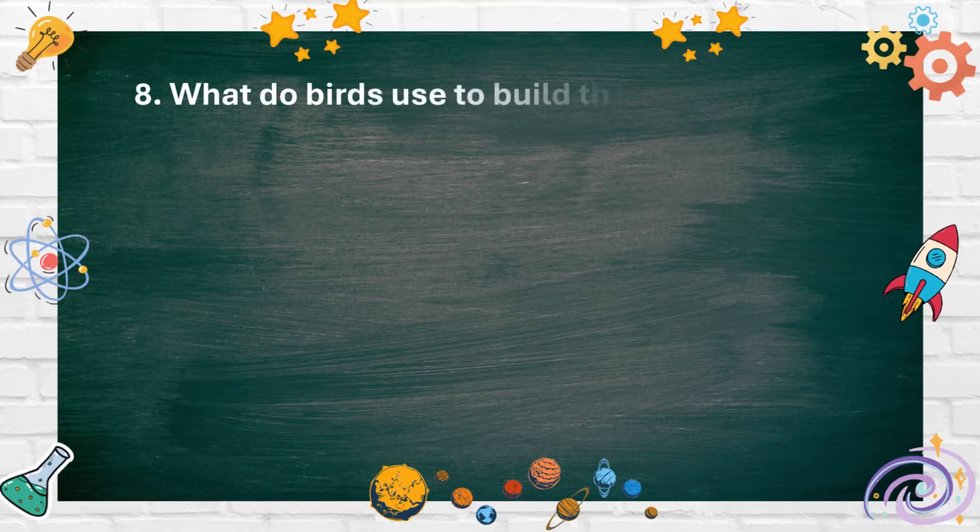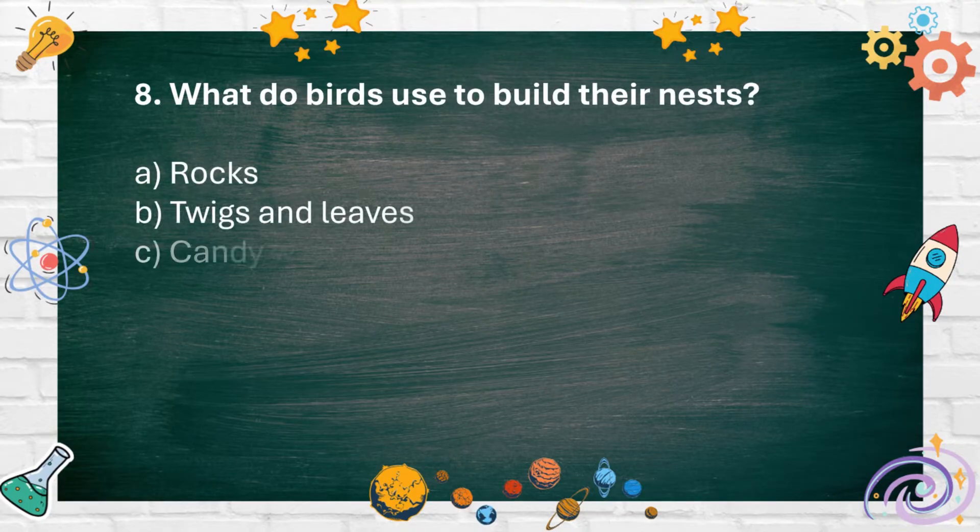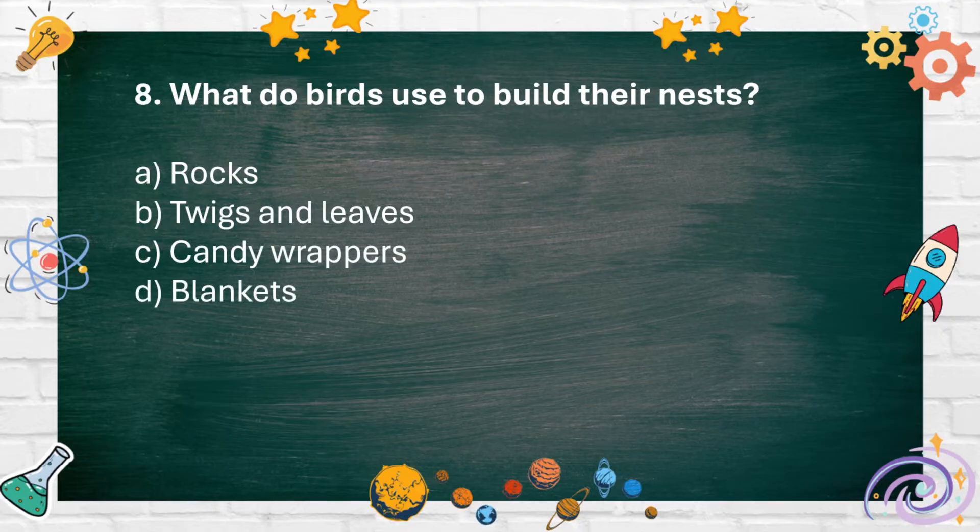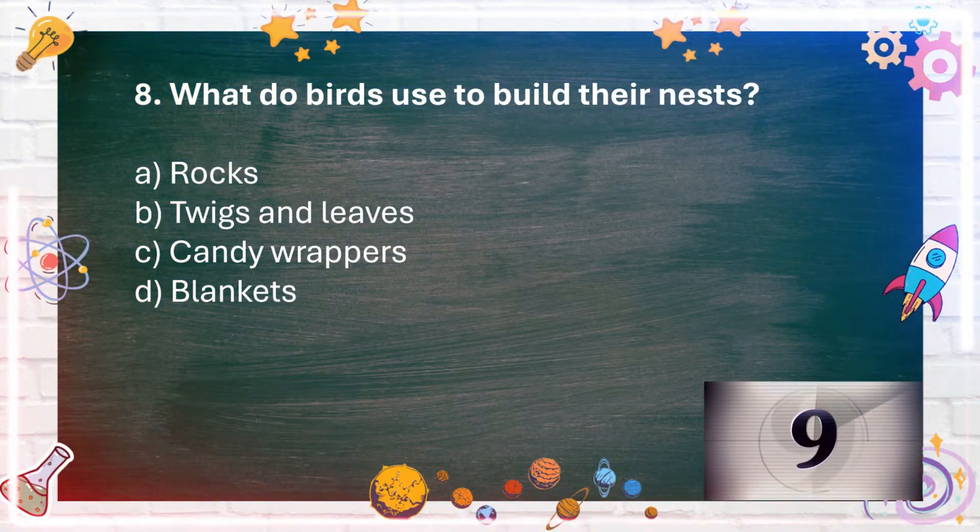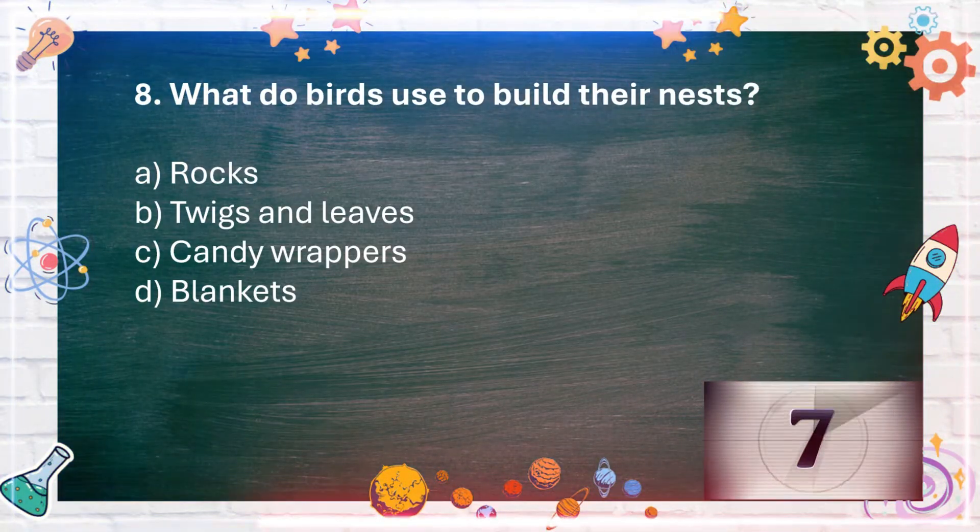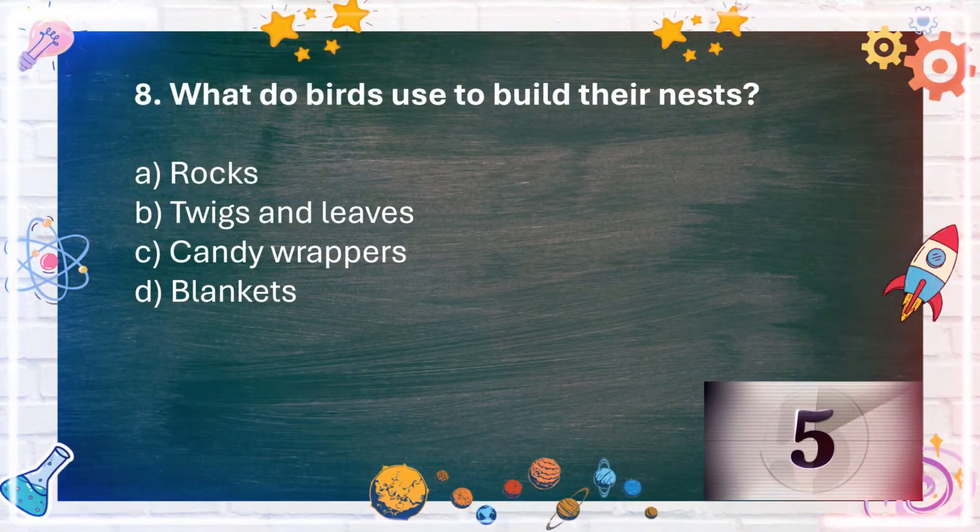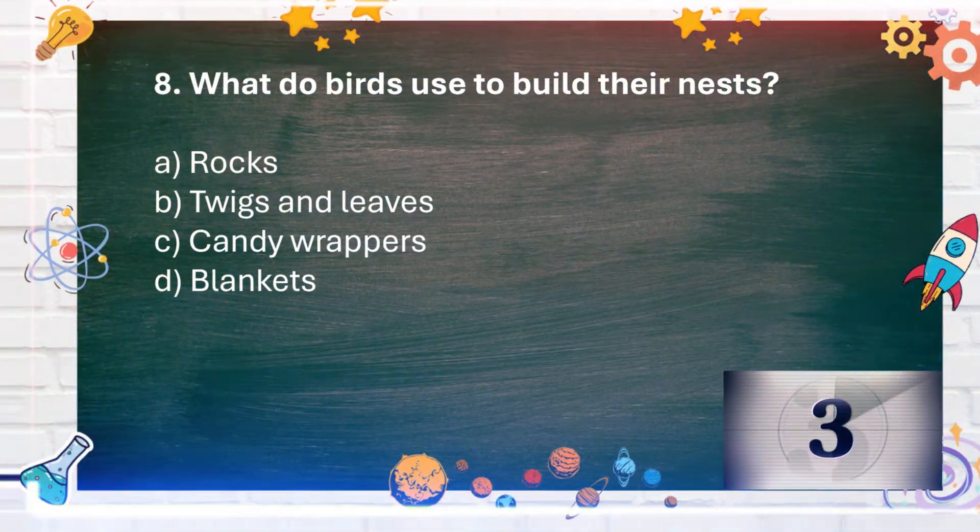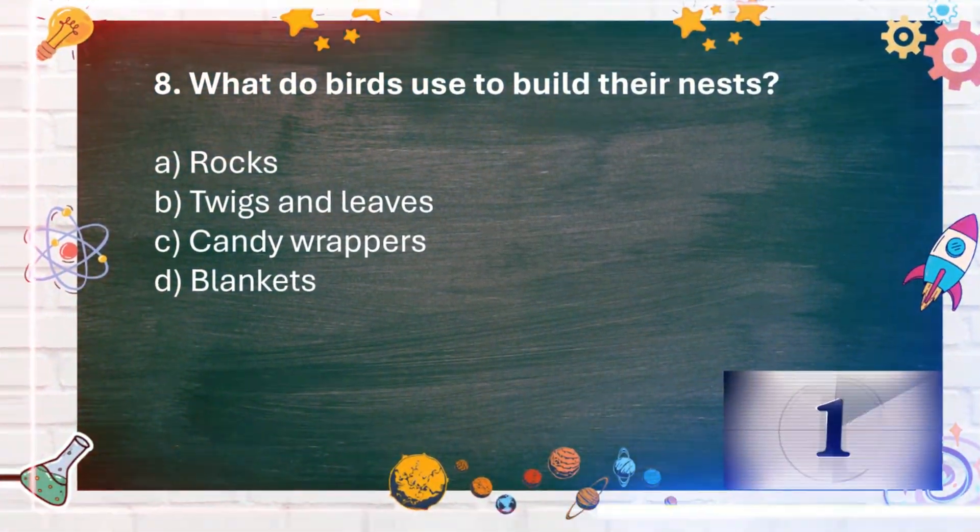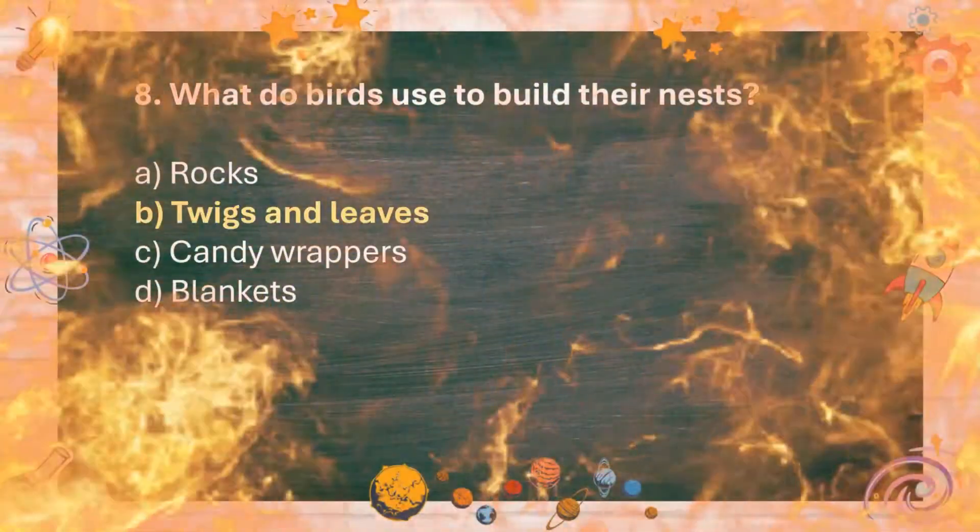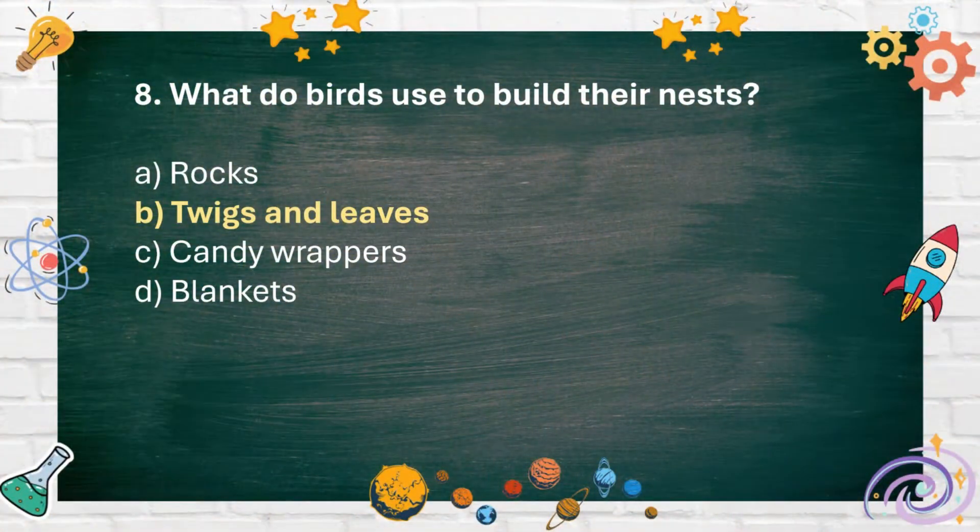Number 8. What do birds use to build their nests? A. Rocks B. Twigs and leaves C. Candy wrappers D. Blankets. The answer is B. Twigs and leaves.